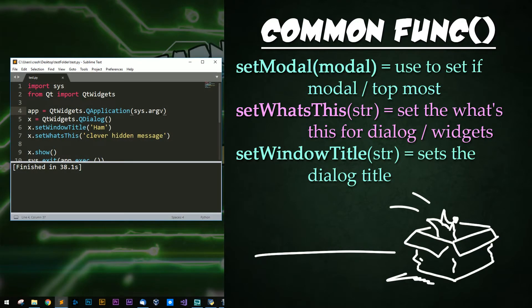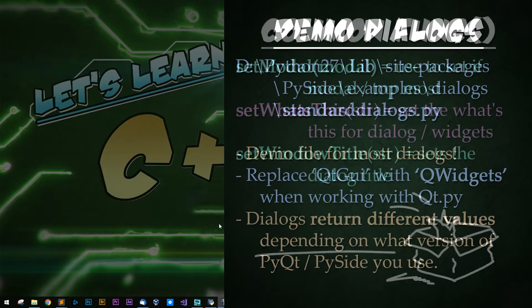Some common functions for QDialogues: setModal, which is used to set if the window will be modal or the topmost dialog or not; setWhatsThis, which of course takes in a string; and setWindowTitle, just as before. And that's pretty much it.